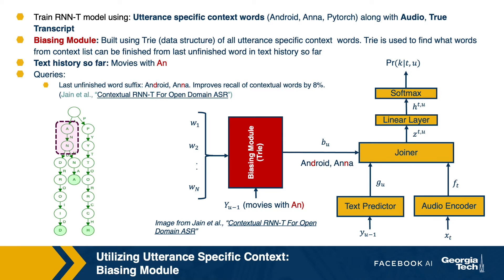We will next look at an approach to do personalization where we don't need to make changes in training — that system is classified as explicit boosting. This system of introducing a biasing module in RNNT improves recall of contextual words by 8.3% compared to the baseline. You can find more details about the model and experiments in the paper 'Contextual RNNT for Open Domain ASR'.